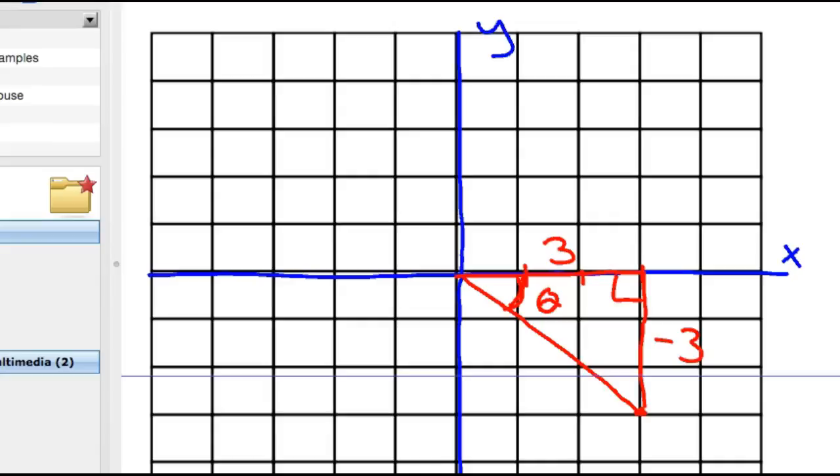And now we just need to find the radius, r. To find that, you just use Pythagorean theorem. So 3 squared plus negative 3 squared equals r squared. That's 9 plus 9. If you know your math, you know that the answer is going to be 3 root 2. But Pythagorean theorem works great.